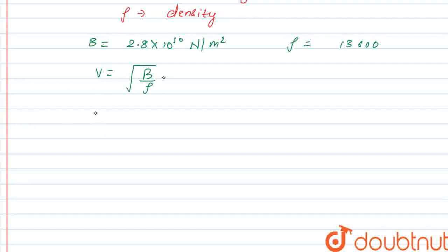We are just simply putting the value. V is equal to root under 2.8 into 10 to power 10 upon 13600. And we need to calculate this data.